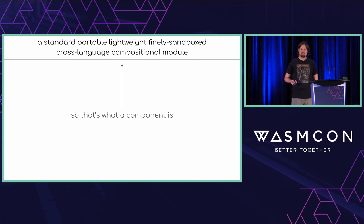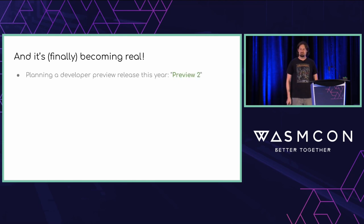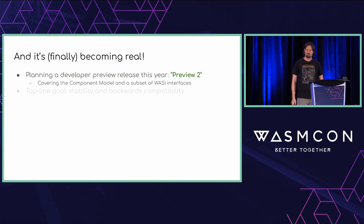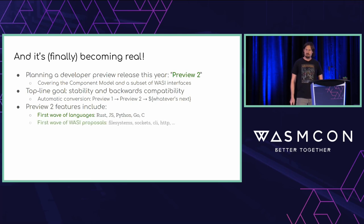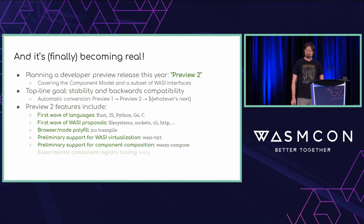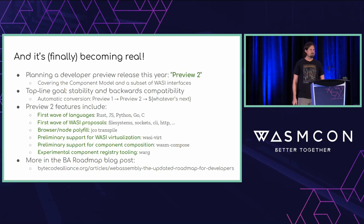It's finally becoming real. We're planning a developer preview release this year called Preview 2, covering both the component model and a subset of WASI interfaces. The top-line goals are stability and backwards compatibility — including automatic conversion from Preview 1 core modules into Preview 2 components, with a commitment to a similar conversion tool for future versions. Preview 2 features include a first wave of languages — Rust, JS, Python, Go, and C — a first wave of WASI proposals including file systems, sockets, CLI, HTTP, and possibly others. Also a browser and Node polyfill via jco-transpile, preliminary WASI virtualization via WASI-VERTS, preliminary component composition via WASM Compose, and experimental component registry tooling via warg. More details are in the Bytecode Alliance roadmap blog post by Bailey Hayes.